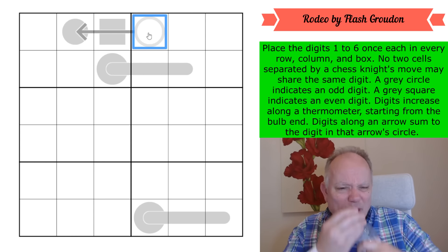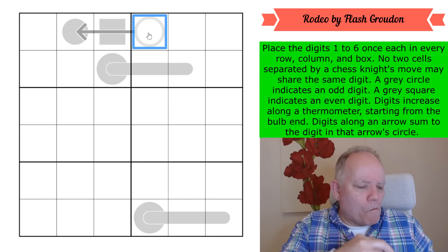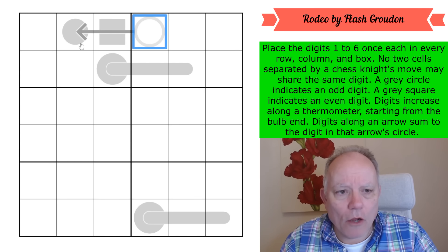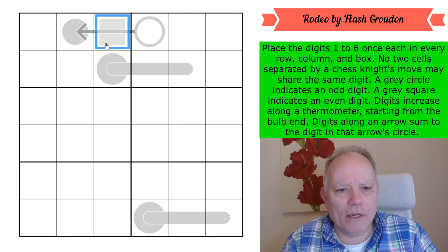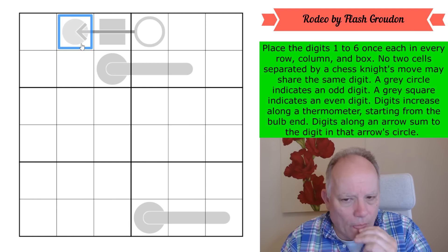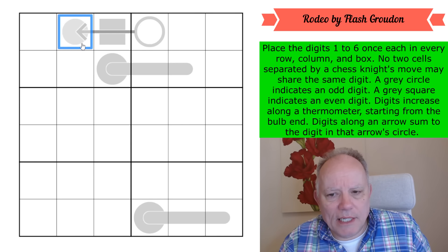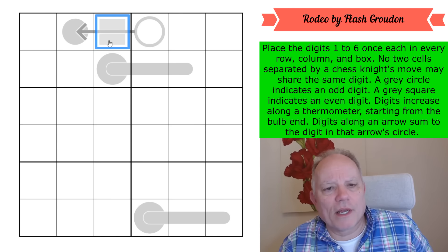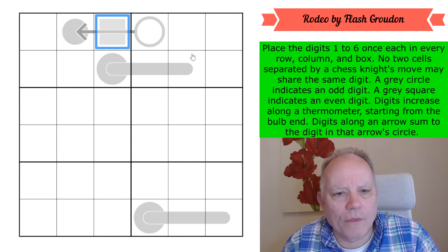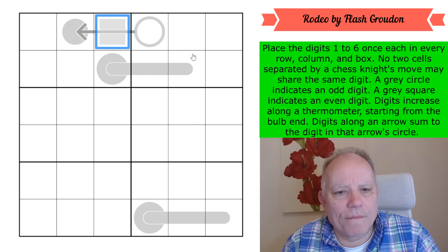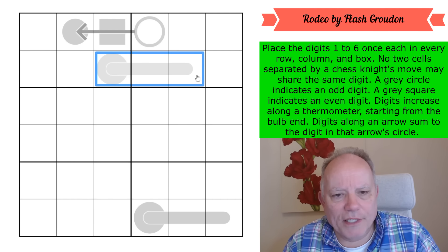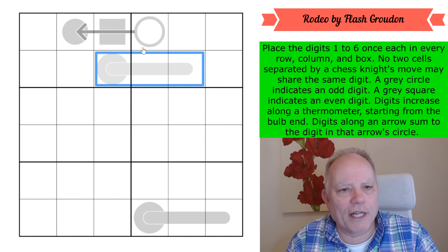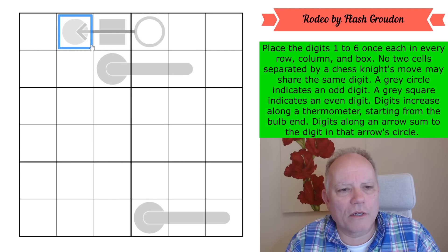We have a circle and a square as well. A gray circle in a cell indicates an odd digit and a gray square indicates an even one. I'm not going to assume that is the case for these thermos.